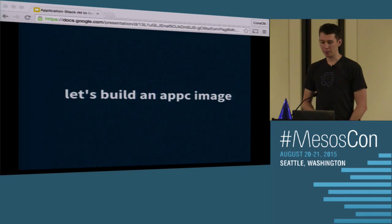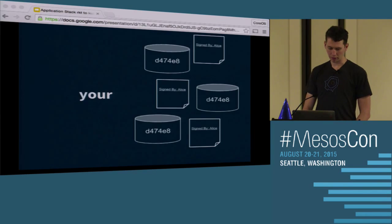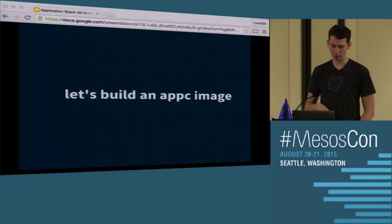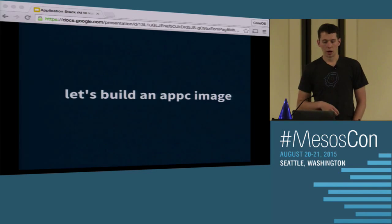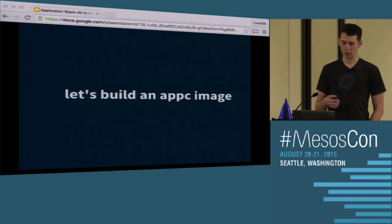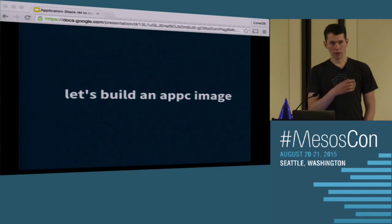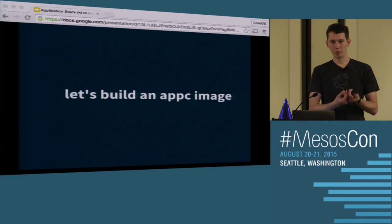Let's start by going through the process of transforming code into an application container image. The application container image spec is a spec that we built along with a bunch of other folks, including folks from Mesosphere, that defines metadata and an image format for container images.